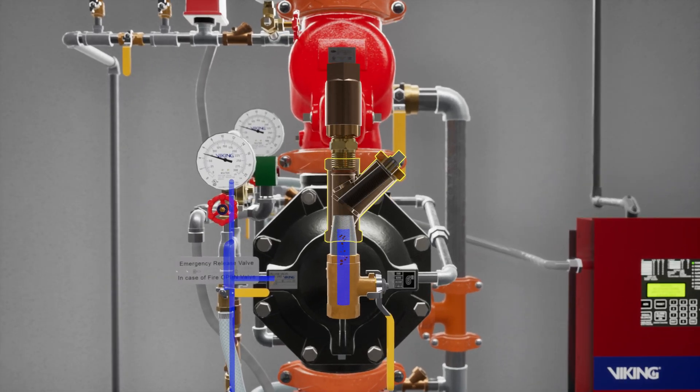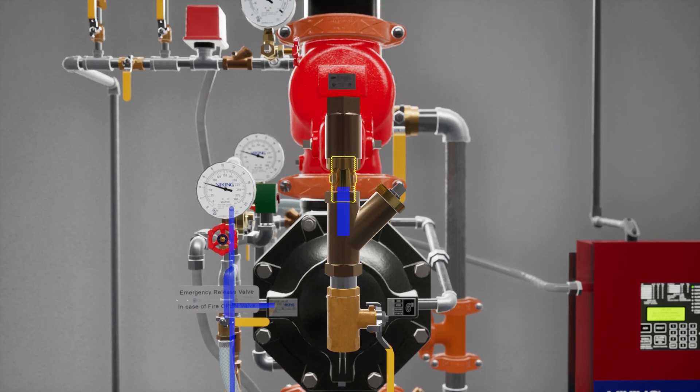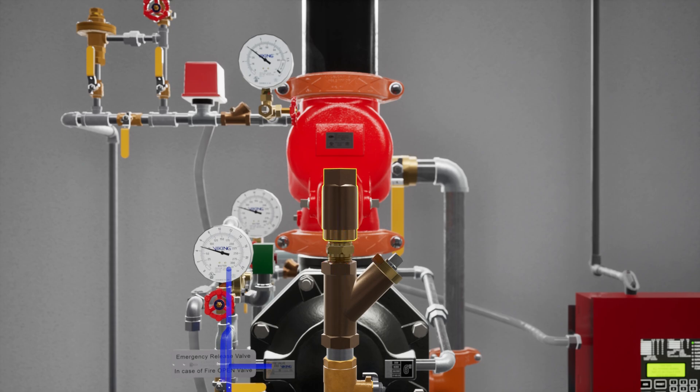The Y strainer keeps debris from entering the restricted orifice. The restricted orifice reduces the rate at which water can enter the prime chamber, ensuring the prime water will drain faster than it can be supplied. The check valve only permits water to enter the priming chamber, allowing prime chamber pressure to be maintained.